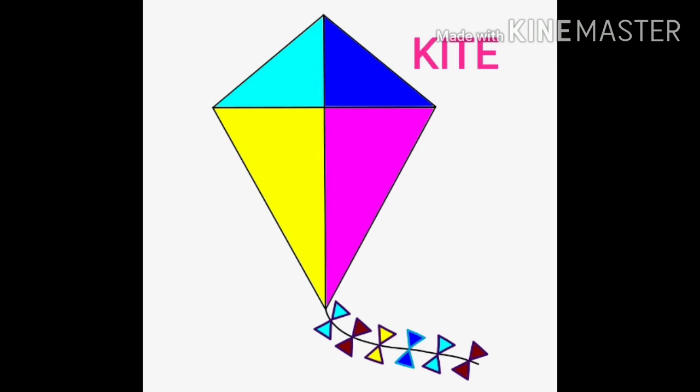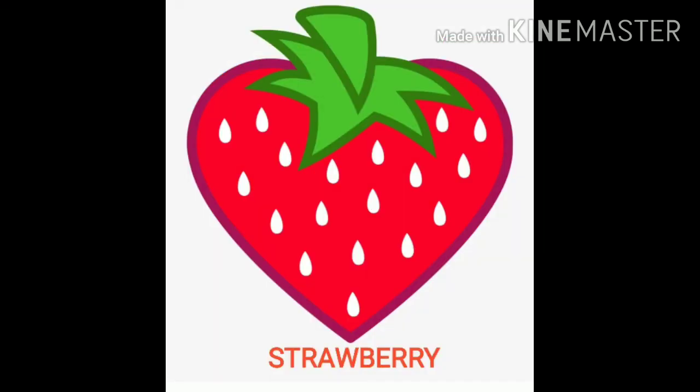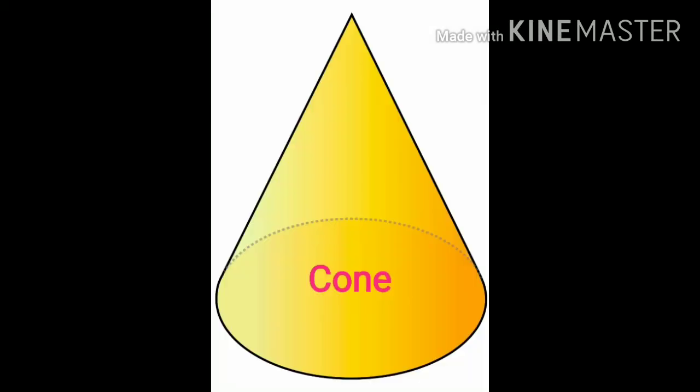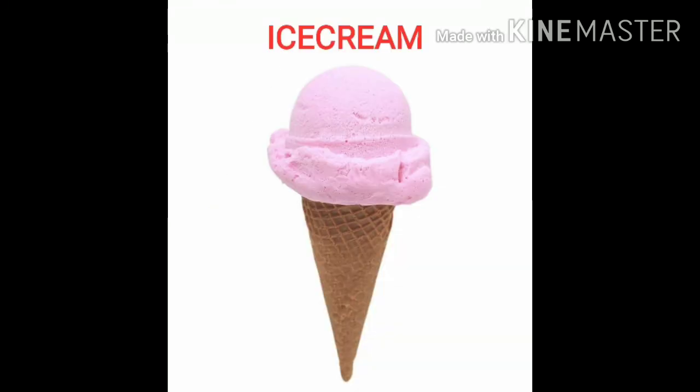Heart. Heart shape object is strawberry. Cone. Cone shape object is ice cream cone.